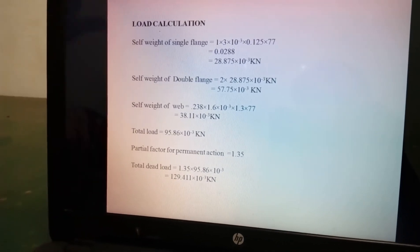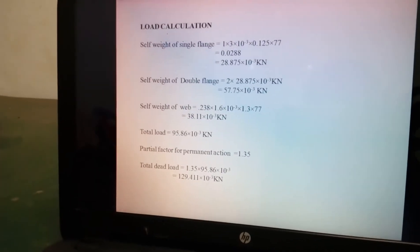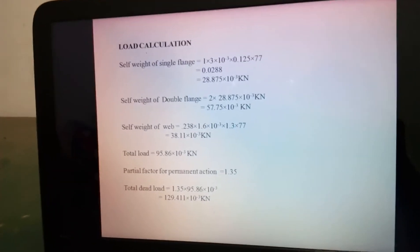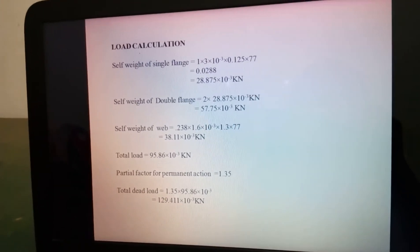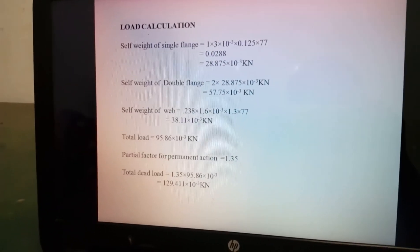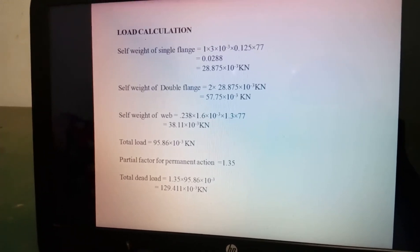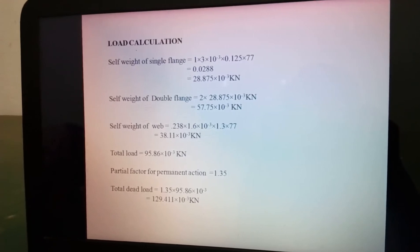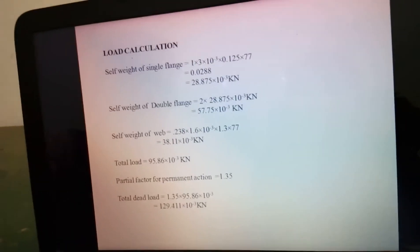Load calculation. Self weight of single flange is 28.875 into 10 power minus 3 kN. Self weight of web is 38.11 into 10 power minus 3 kN. Total load is 95.86 into 10 power minus 3 kN. Partial factor for permanent action is 1.35. Total dead load is 129.411 into 10 power minus 3 kN.